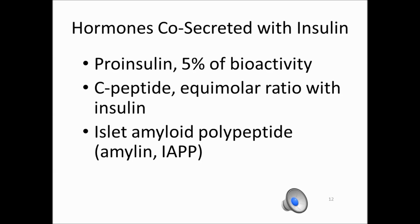Amylin is also called islet amyloid polypeptide or IAPP. C-peptide is secreted at an equimolar ratio with insulin since it is a cleavage product — if you cleave pro-insulin, you get equal amounts of C-peptide and insulin. Pro-insulin is not secreted in large amounts and biologically does not play a big role because it only has about 5% of the bioactivity of insulin.